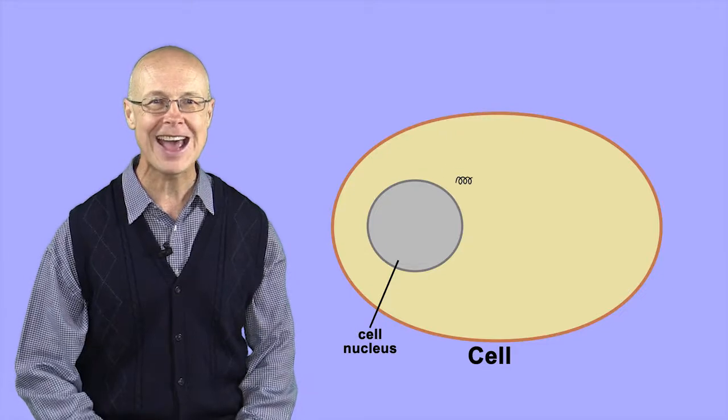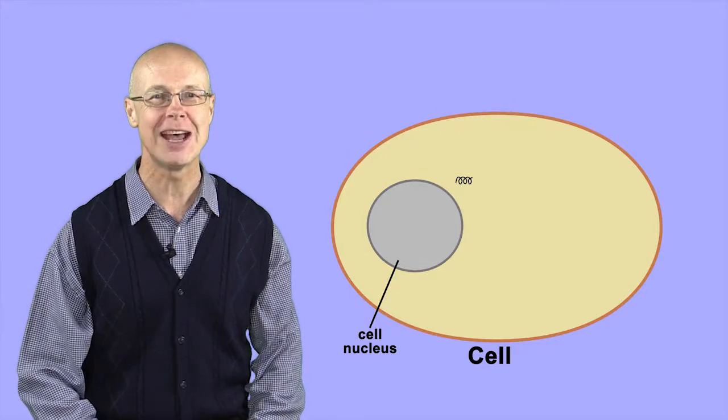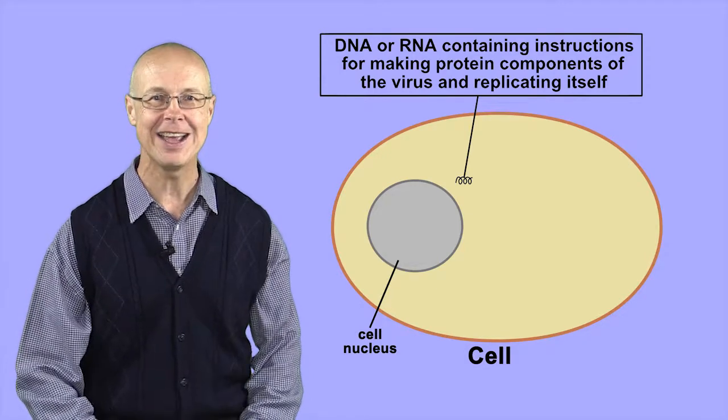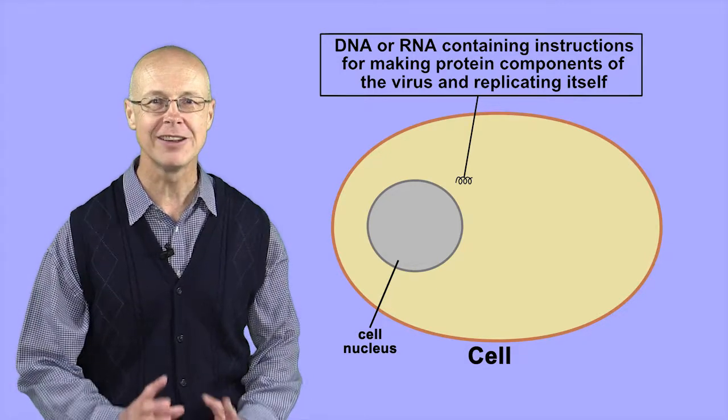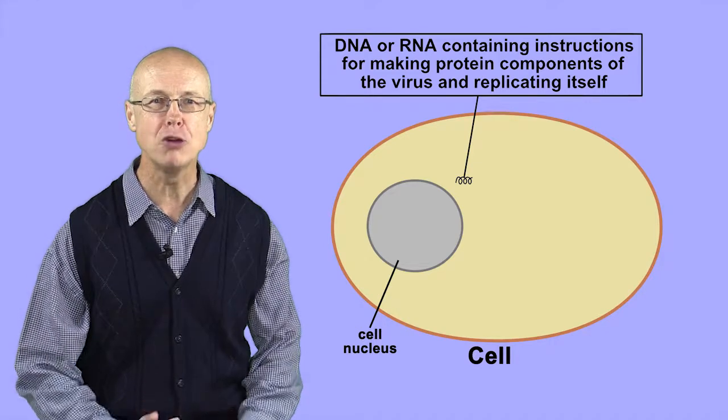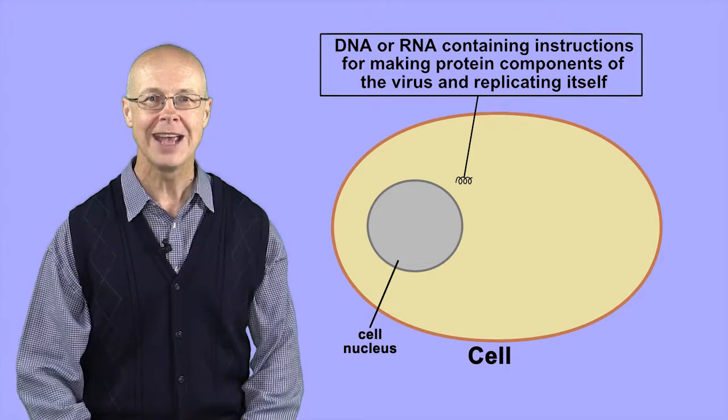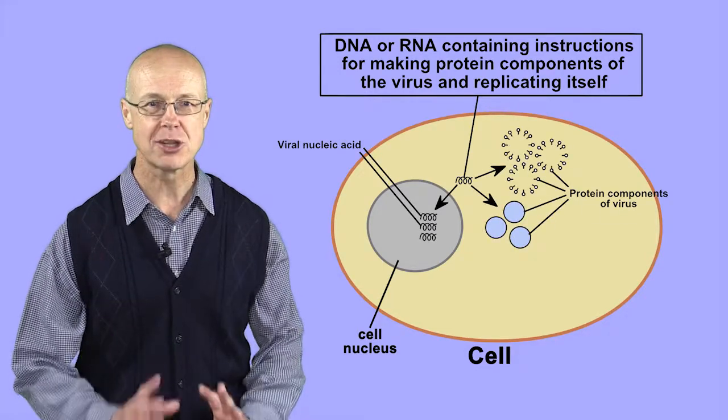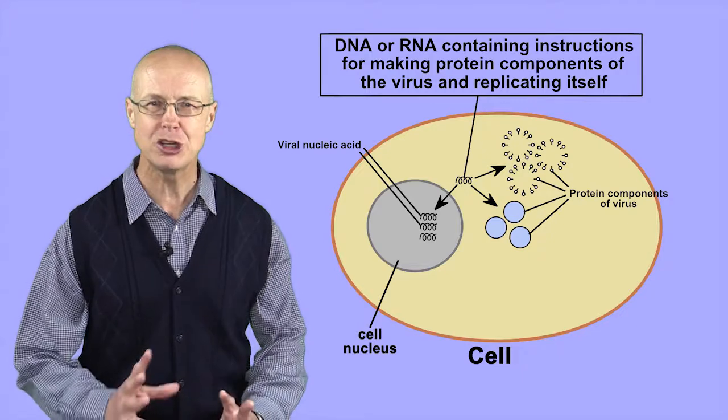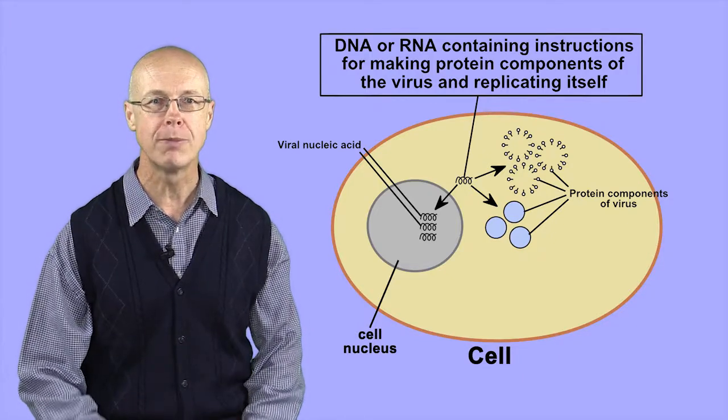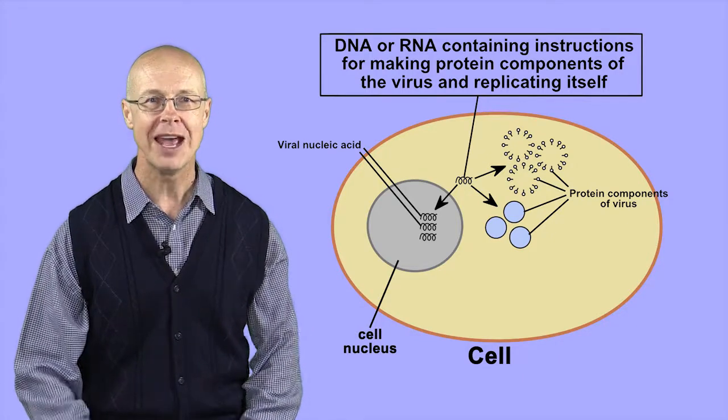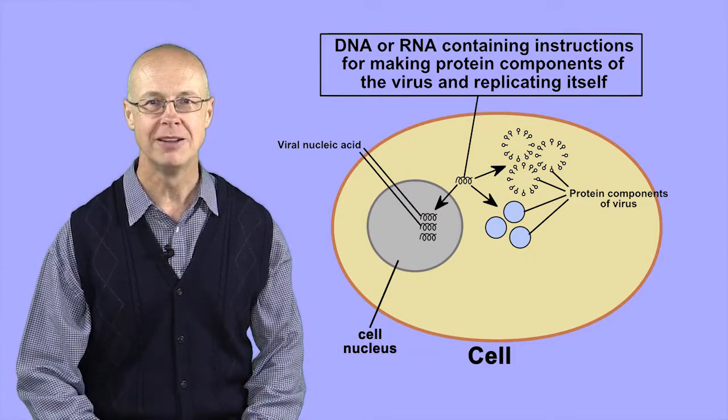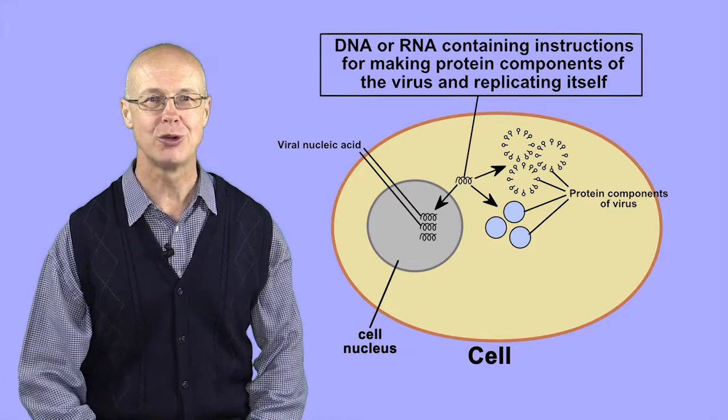and the viral nucleic acid is released into the cell. This nucleic acid, in the form of RNA or DNA, is a molecule containing a list of instructions about how to make the protein components of the virus and how to replicate the viral nucleic acid. This instructs the machinery of the cell that would normally be used to make the proteins coded for by the cell's DNA and to replicate the cell's DNA, instead to make viral protein and replicate viral nucleic acid.